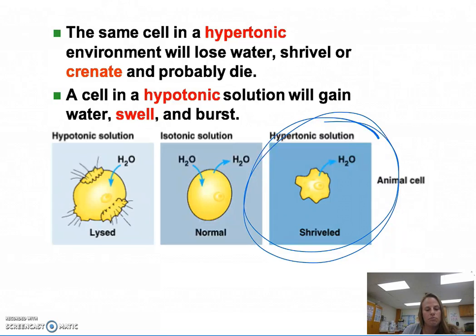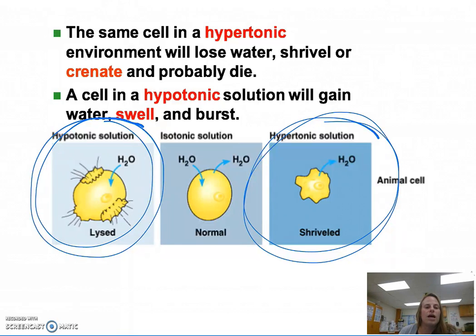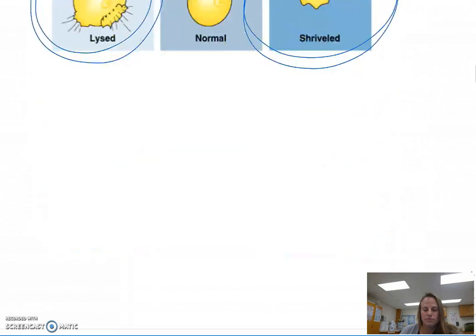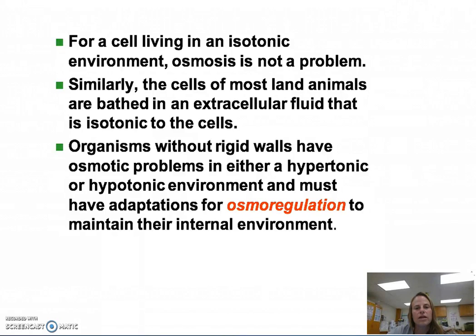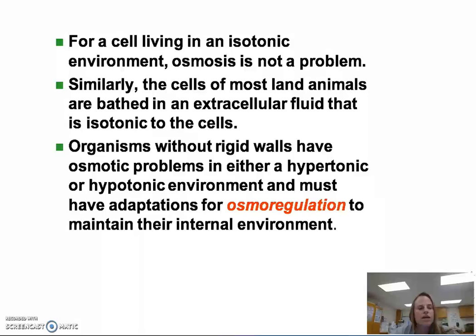In a hypotonic solution, the cell can burst — known as lysis. For a cell living in an isotonic environment, osmosis isn't a problem. Similarly, the cells of most land animals are bathed in extracellular fluid that is isotonic to the cell. However, organisms without rigid walls do have osmotic problems if they're put in either a hypertonic or hypotonic environment, and those organisms must do osmoregulation to maintain their internal environment.